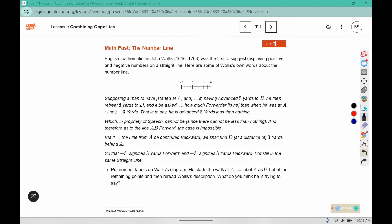English mathematician John Wallace, who lived from 1616 to 1703, was the first to suggest displaying positive and negative numbers on a straight line. Here are some of Wallace's own words about the number line. Supposing a man to have started at A and, if advancing 5 yards to B, he then retreated 8 yards to D. And it be asked, how much forwarder is he than when he was at A? I say, negative 3 yards. That is to say, he has advanced 3 yards less than nothing. Which, in propriety of speech, cannot be, since there cannot be less than nothing.